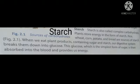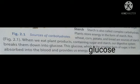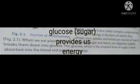Starch is also a carbohydrate but it is complex in nature. Plants store the energy in the form of starch. It is stored in the form of rice, wheat, corn, potatoes, breads. When we eat plant products containing sugar and starch, our digestive system breaks them down into glucose. This glucose, which is the simplest form of sugar, is then absorbed into the bloodstream and provides us energy.